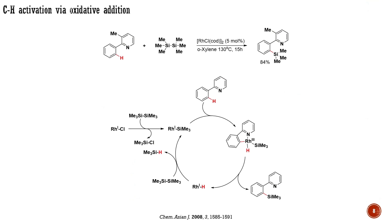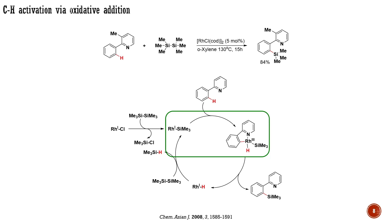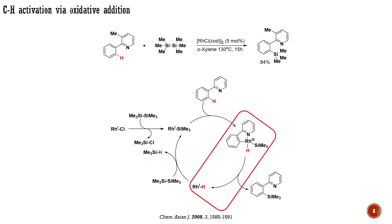The next example is the rhodium-catalyzed silylation of aromatic compounds, published in 2008. The mechanism is quite similar to the previous one. A ligand substitution reaction occurs at rhodium, accompanied by the cleavage of the silicon-silicon bond. The formed rhodium-1 intermediate, after coordination to the directing group, undergoes oxidative addition to the CH bond, generating this rhodium-3 intermediate. The final stage of the catalytic cycle is reductive elimination, producing the product and regenerating the active catalyst, rhodium-1.